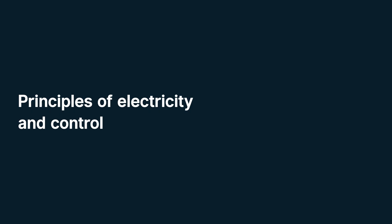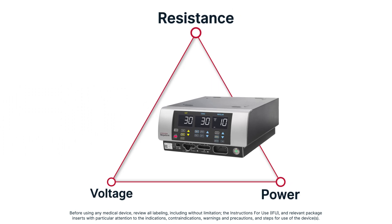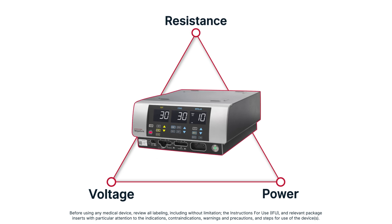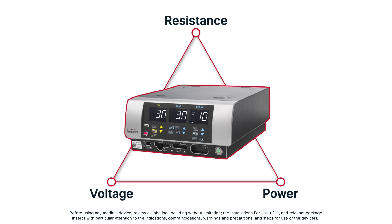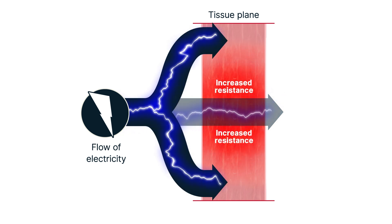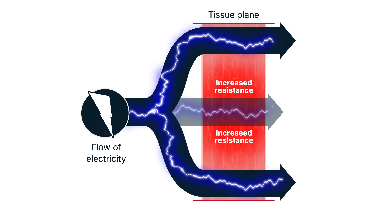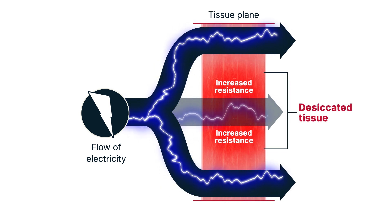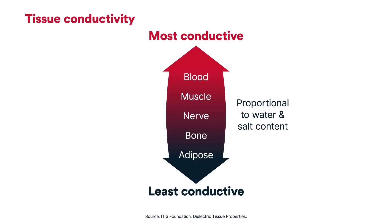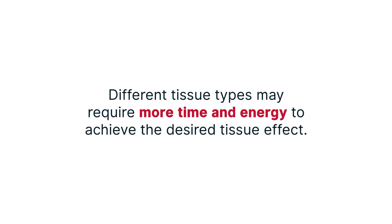Modern electrosurgery generators use the principles of electricity and balance voltage, power, and the resistance encountered from tissue impedance to deliver the desired tissue effect. If an electrical current is impeded, it will find an alternate, less resistant path to complete the circuit. In electrosurgery, the most common source of tissue resistance is desiccation, or the loss of moisture when heat is applied. Tissue conductivity is proportional to its water and salt content. Blood is the most conductive and adipose tissue is the least conductive, which explains why different tissue types may require more time and energy to achieve the desired tissue effect.